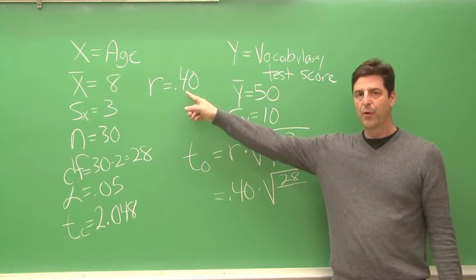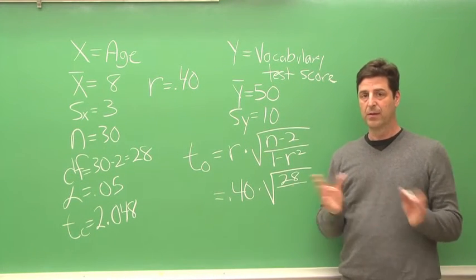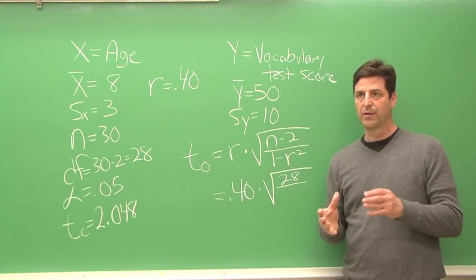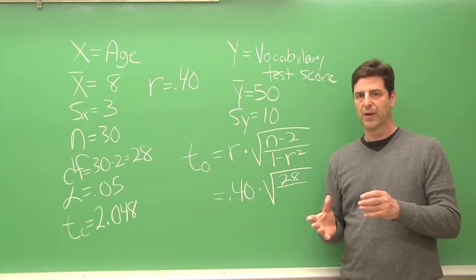r is .4, r squared is going to be .16, and 1 minus r squared is going to be .84.